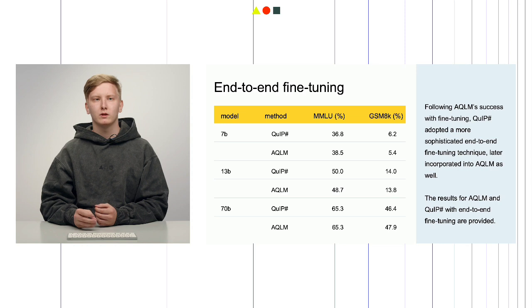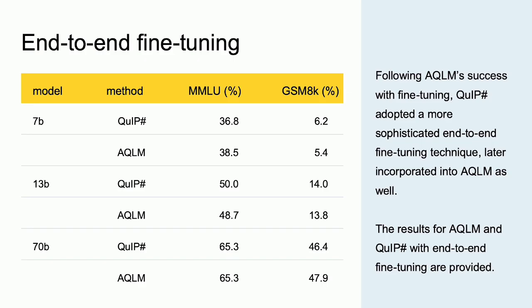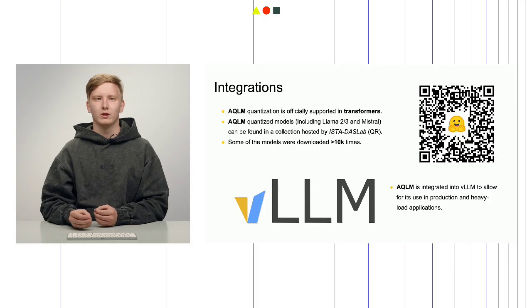A number of events occurred after the initial results publication, concerning both the method's performance and adoption. Following AQLM's success with post-quantization fine-tuning, QuipSharp — the strongest competing extreme compression method — adopted a more sophisticated end-to-end fine-tuning technique of its own, greatly boosting its performance. In turn, the same technique was applied to AQLM, greatly improving its performance as well. In the end, AQLM and QuipSharp exhibit very similar performances with mostly non-significant differences across the board. AQLM has also been integrated into Hugging Face Transformers, and coupled with a large number of quantized models published on the Hub, it has found widespread adoption in the local LLM community.